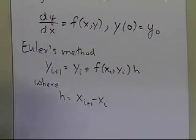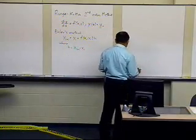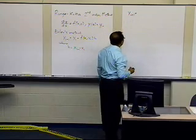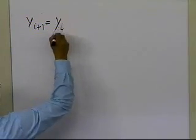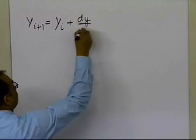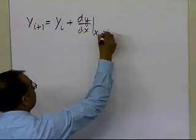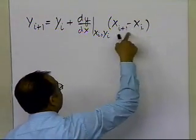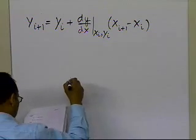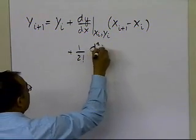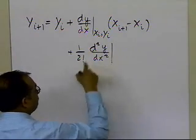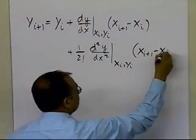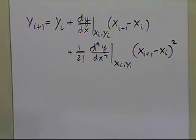In order to do that, we need to look at Taylor series, which you must be familiar with by now. The Taylor series for a point at x_i+1 is: the value of the function at x_i, plus the value of the derivative of y at x_i, y_i, multiplied by the difference between the point where you are and the point where you want to go, plus 1 over factorial 2 times the second derivative of y with respect to x, evaluated at x_i, y_i, times the square of that difference.